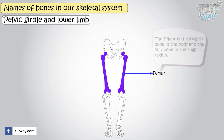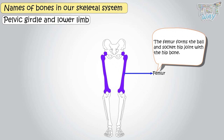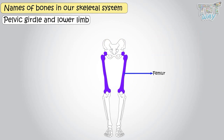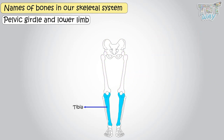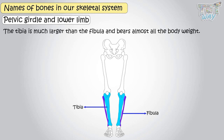This is the femur, which is the longest bone present in our body and also the only bone present in the thigh region. Femur forms the ball and socket hip joint with the hip bone and also forms the knee joint with the tibia and patella. Tibia and fibula are the bones of our lower leg. Tibia is much larger than the fibula and bears almost all the body's weight.